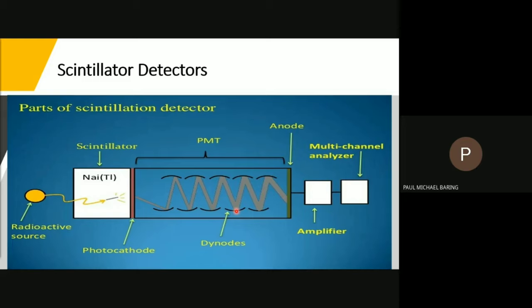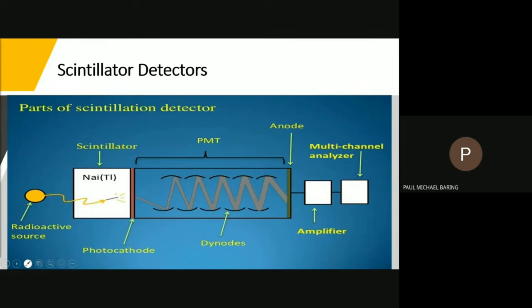To detect different kinds of particles, we modify the scintillator material. Sodium iodide is used to detect gamma particles; for protons and alpha particles, sodium iodide is also used; and zinc sulfide is used to detect alpha particles.